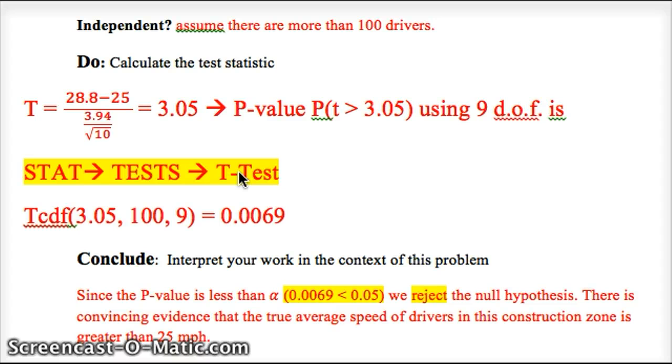you can go to stat tests, t-tests. It's number 2. We have data here. So you're going to highlight data. Then go down to, you'll see mu naught. That's your null hypothesis. You put 25 there, because that's what we're saying in equals. Go to list L1. You should have added your list of the values that we had from our sample.